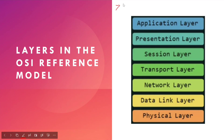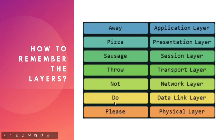The OSI model has 7 layers in total. From bottom to top: Physical layer, Data Link layer, Network layer, Transport layer, Session layer, Presentation layer, and Application layer. A mnemonic to remember them is: 'Please Do Not Throw Sausages Pizza Away' — where each first letter corresponds to a layer from Physical up to Application.